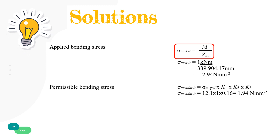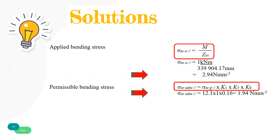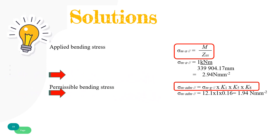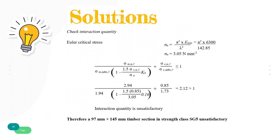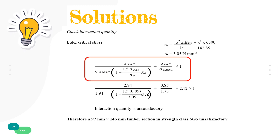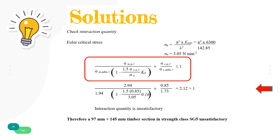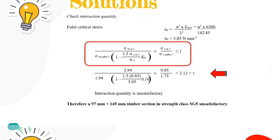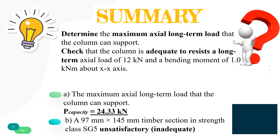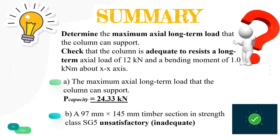The permissible bending stress, determined by multiplying grade stress by all modification factors, is 1.94 N/mm². These values are substituted into the interaction quantity formula in Clause 13.6. The combination of compression and bending stress must be equal to or less than 1 to satisfy the formula. The result is 2.12, which has exceeded the limit of 1.0. Hence, the interaction quantity is unsatisfactory. In summary, the maximum axial long-term load that the column can support is 24.33 kN, and the column is inadequate to resist the applied loads.